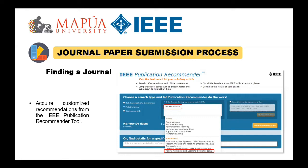The link to access the information is at journals.ieeeauthorcenter.ieee.org. There you can check on the IEEE journal article authoring tools and templates and find what you need.